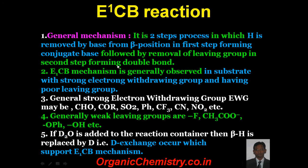Lastly, the E1CB reaction. The general mechanism is a two-step process in which hydrogen is removed by a base from the beta position in the first step, forming a carbanion conjugate base, followed by removal of the leaving group in the second step, forming the double bond. E1CB mechanism is generally observed in substrates with a strong electron-withdrawing group and having a poor leaving group. The strong electron-withdrawing groups may be aldehyde, ketone, SO₂, Ph, CF₃, CN, NO₂, etc. They are all of minus-M nature.